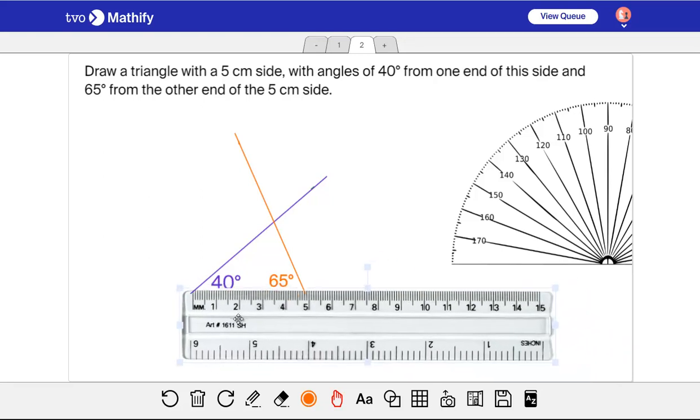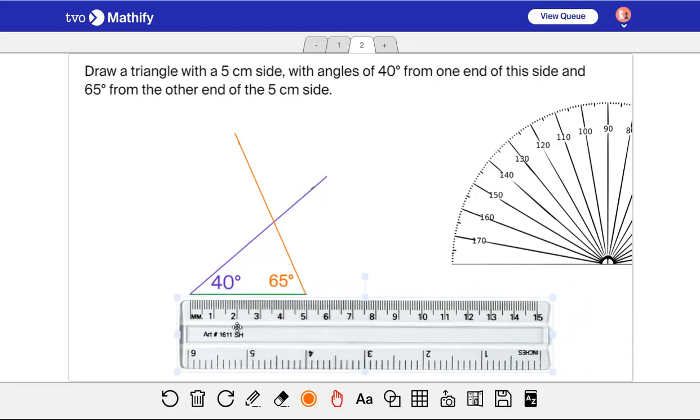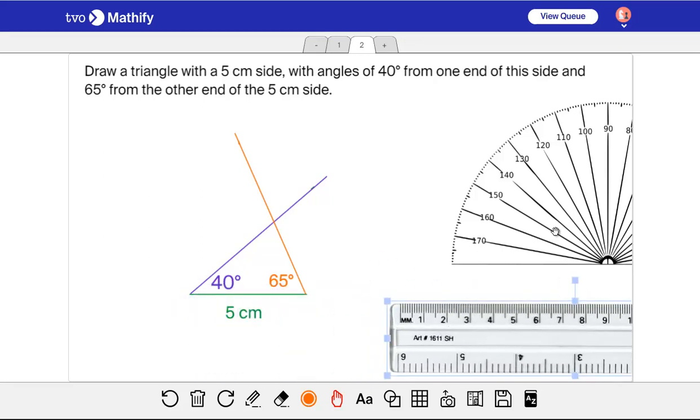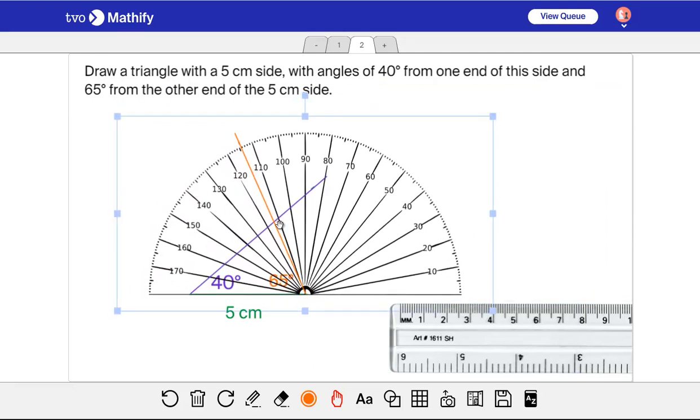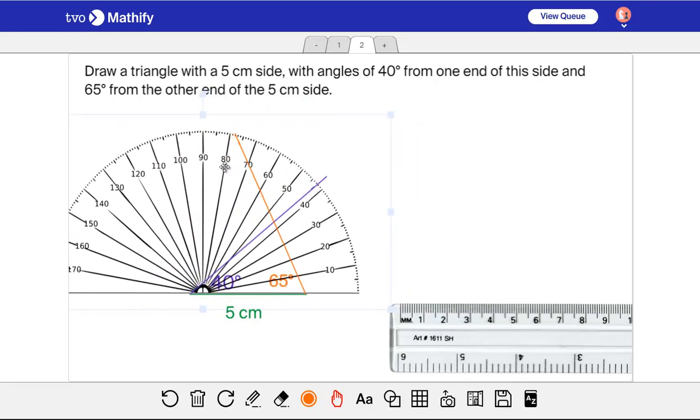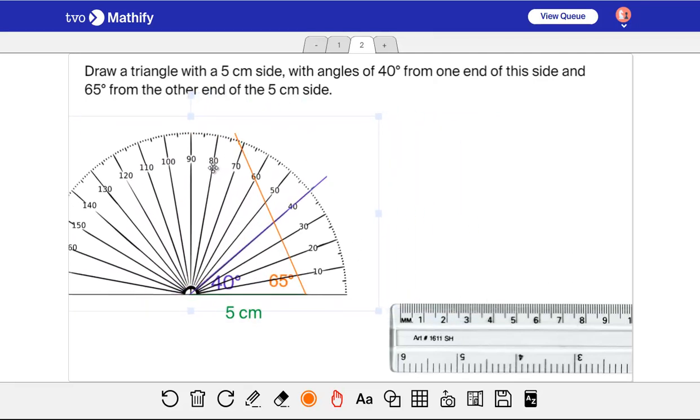I certainly do have a 5 centimeter side here. I can check here. So that orange line is 10, 20, 30, 40, 50, 65. And over here, it's right on the 40. So I do have a 40 degree angle over there.